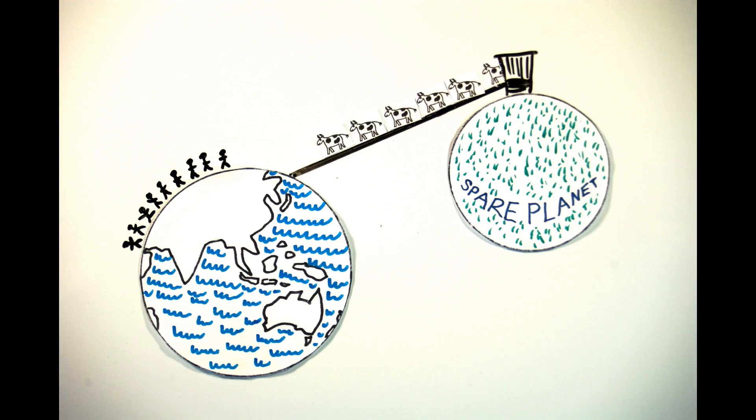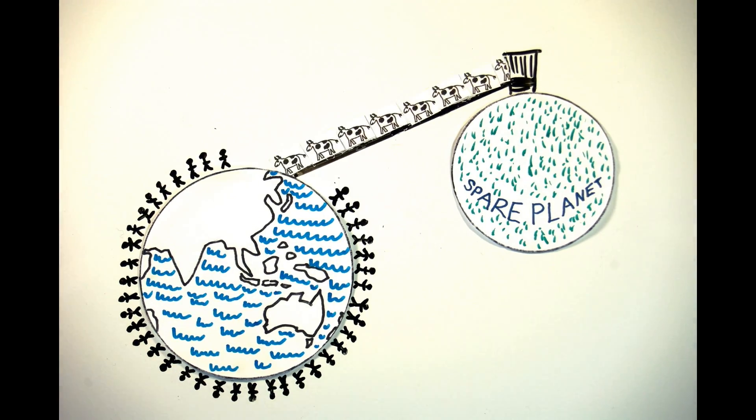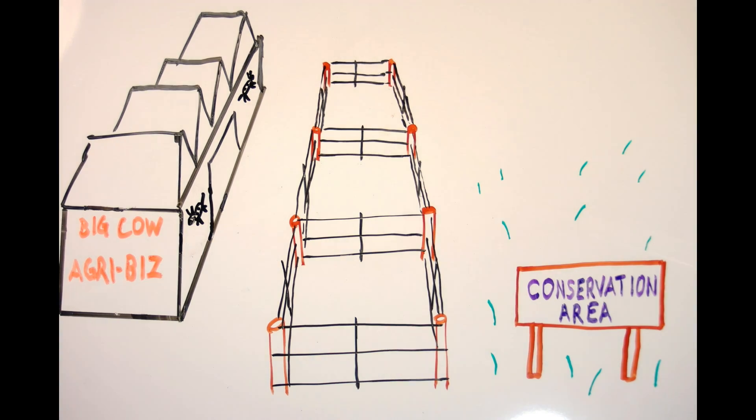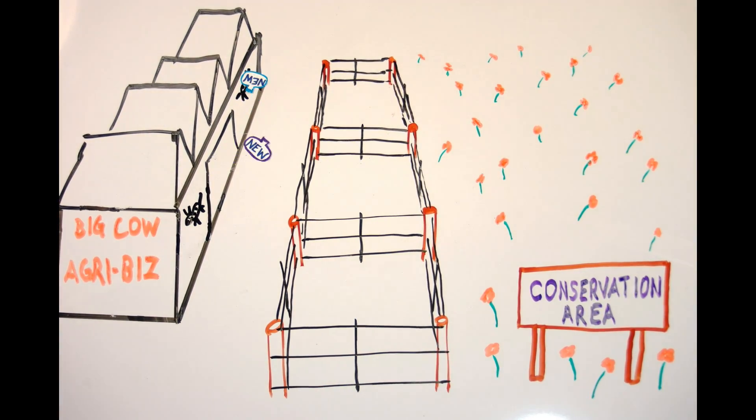The expanding human population creates demand for more meat and dairy products. Responding to this demand, agribusiness promotes new pasture plants designed to increase productivity.